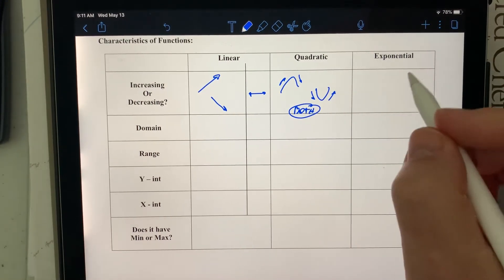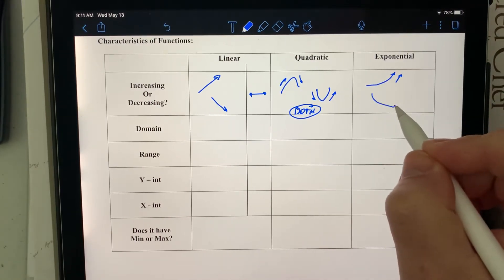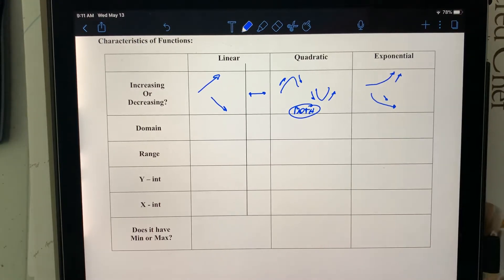The exponential function, we know that it's always increasing or it's always decreasing, and that's kind of a very interesting feature of the exponential function, always increasing or always decreasing.